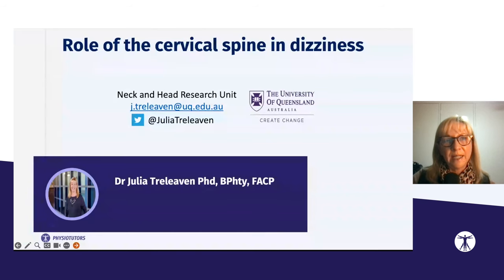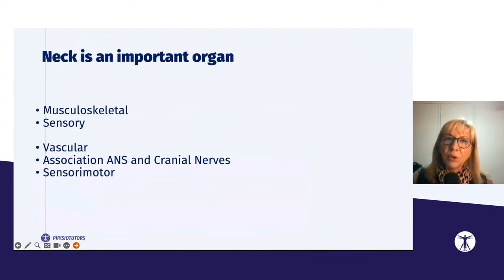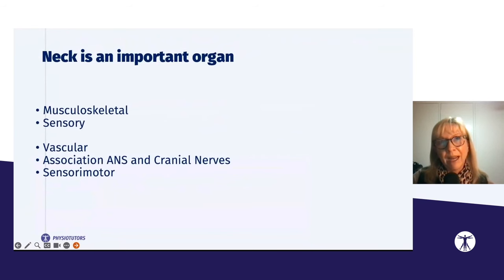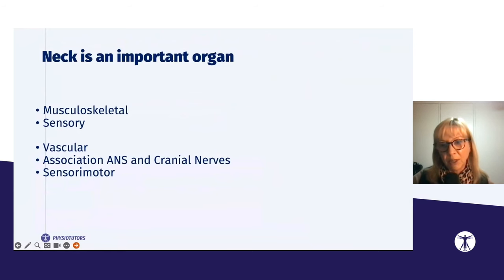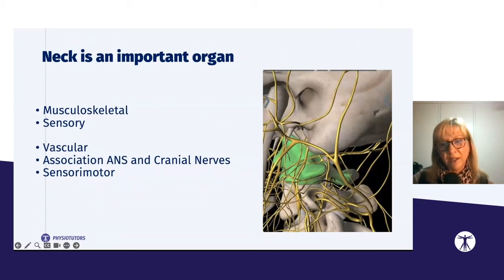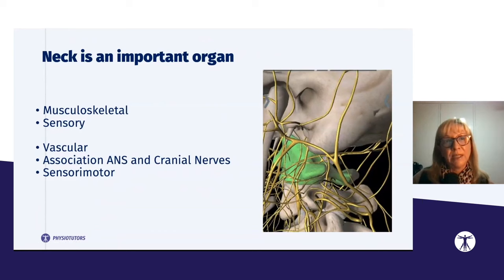Welcome to this lecture about the role of the cervical spine in dizziness. The neck is an important musculoskeletal and sensory organ — it can refer pain into the head and head pain can refer to the neck. There are also vascular structures running through the cervical region that could cause dizziness, and a close association between the autonomic nervous system and the upper cervical spine, sympathetic ganglion, and some cranial nerves.